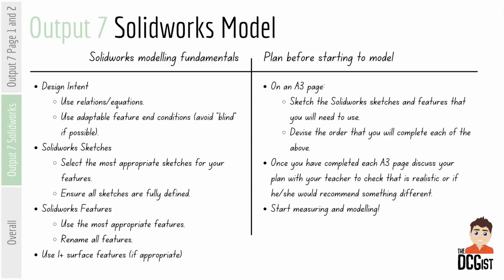Mostly taken from the output 3 presentation, but with a couple of changes — you'll see your SOLIDWORKS modeling fundamentals. At this point you should be pretty proficient with SOLIDWORKS. When you're talking about design intent, you're talking about using relations and equations, and using adaptive features and conditions to avoid blind if possible. This is also a good time to look back and see did you make sure you did all of this in your output 3. In your SOLIDWORKS sketches, you want to select the most appropriate sketches for your features and ensure that all your sketches are fully defined.